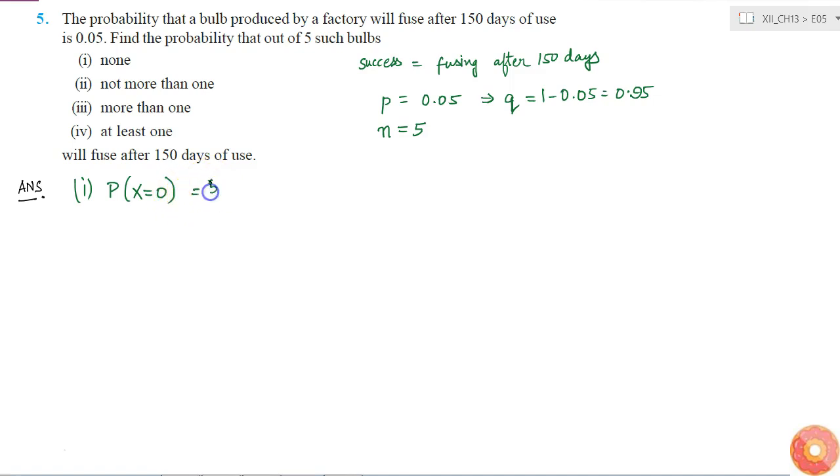So this is simply 5C0 into p to the power 0 into q to the power 5, which is 1 into 1 into 0.95 to the power of 5.